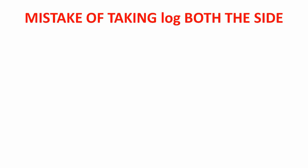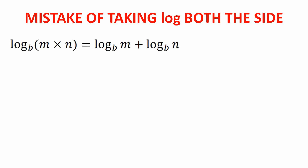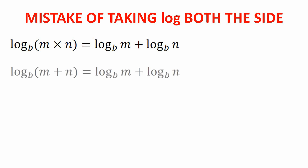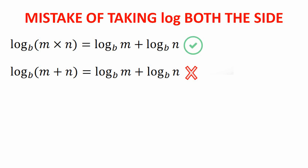Before moving forward let us focus on two important formulas. The first expression is log(m × n) = log m + log n — this is completely right. The second expression, log(m + n) = log m + log n, is completely wrong. We have to consider that log(m + n) is not equal to log m + log n.